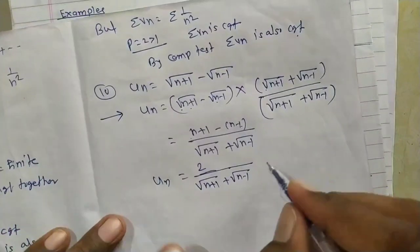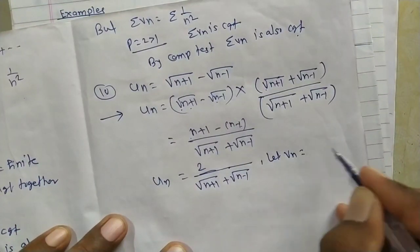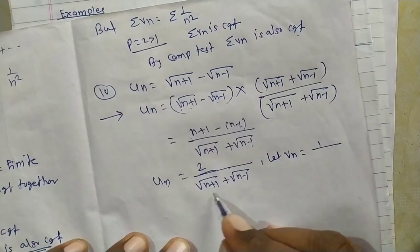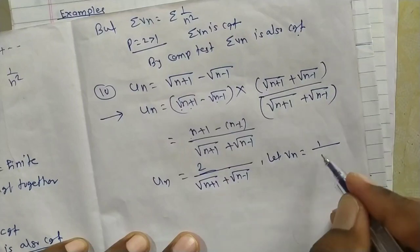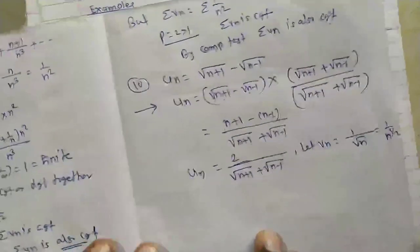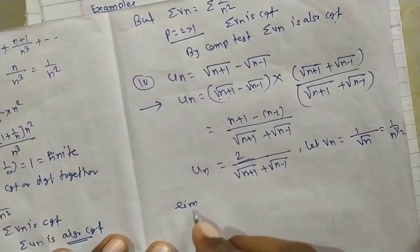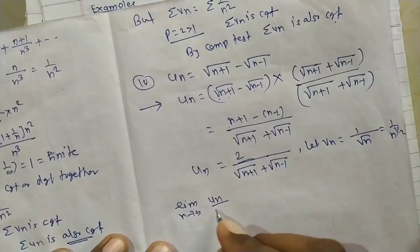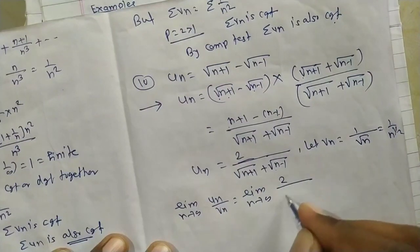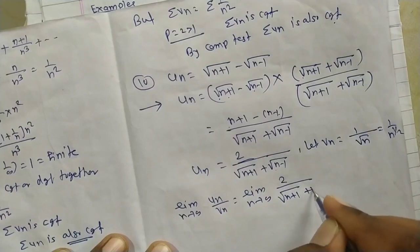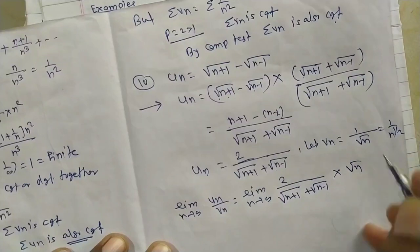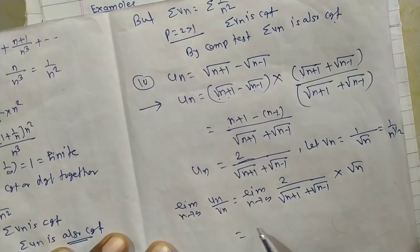Now writing vn from un = 2/[√(n+1) + √(n−1)]: the numerator has no n (it is constant 2, i.e., n⁰), and from the denominator taking √n common from each term, we get vn = 1/√n = 1/n^(1/2). Now find limit of un/vn as n→∞.